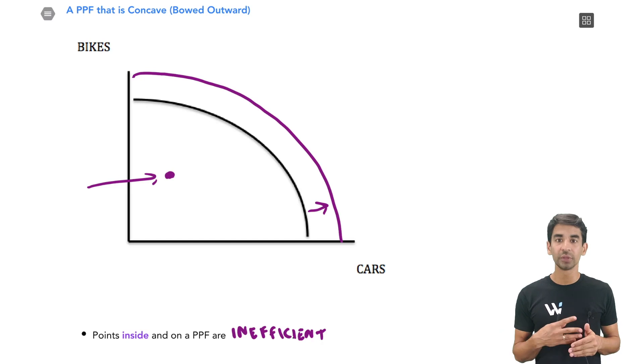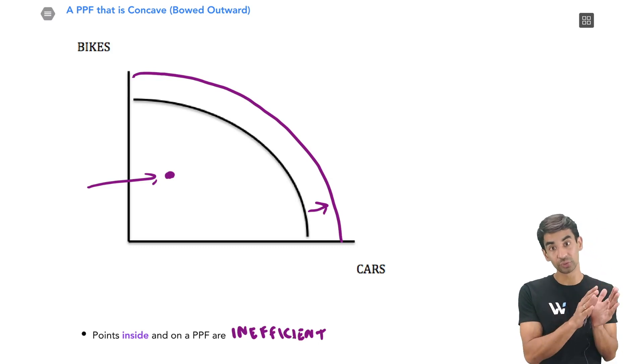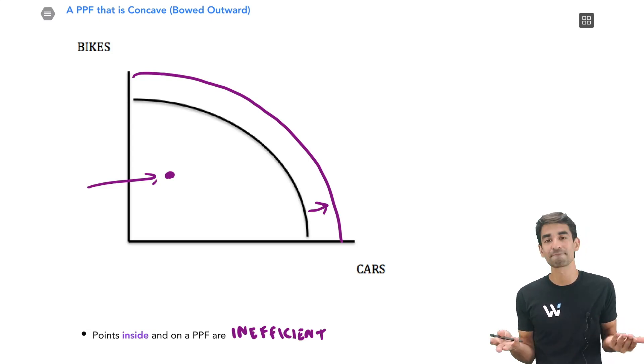So if they say high unemployment, you say no shift in the PPF. We're just at an inefficient point. What will actually shift is if you get more resources, it shifts right. Less resources, shift left. But if you're just not using all of your resources, just not using all of your workers with unemployment, there's no shift. It's just an inefficient point.